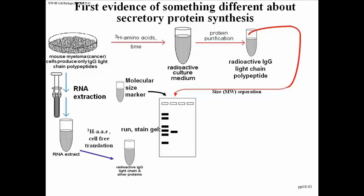You can then add the ingredients needed for cell-free translation: ribosomes, ATP to provide energy — translation is energy intensive — and several other components needed for cell-free protein synthesis. The question being asked is whether, given the machinery needed to make proteins, the ribosomes will bind the messenger RNA in this extract and translate an IgG or any other polypeptide. Since you won't get a lot of IgG this way, radioactive amino acids are added to ensure the small amount produced can be detected.